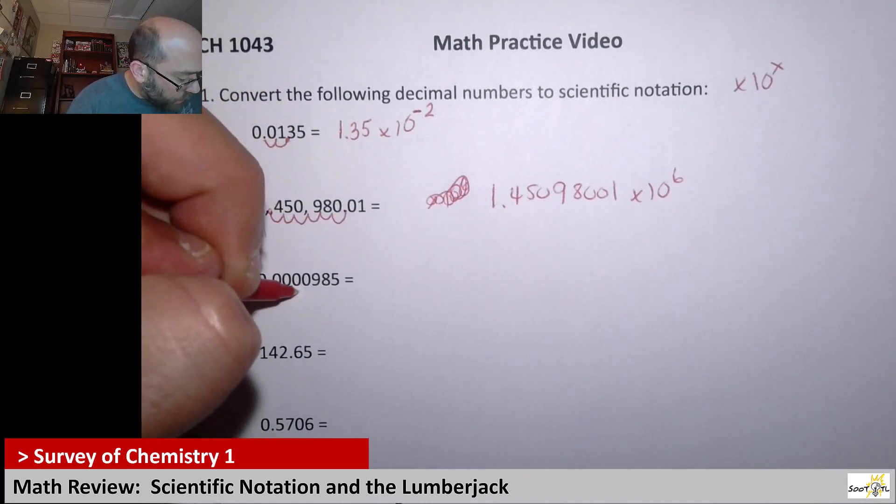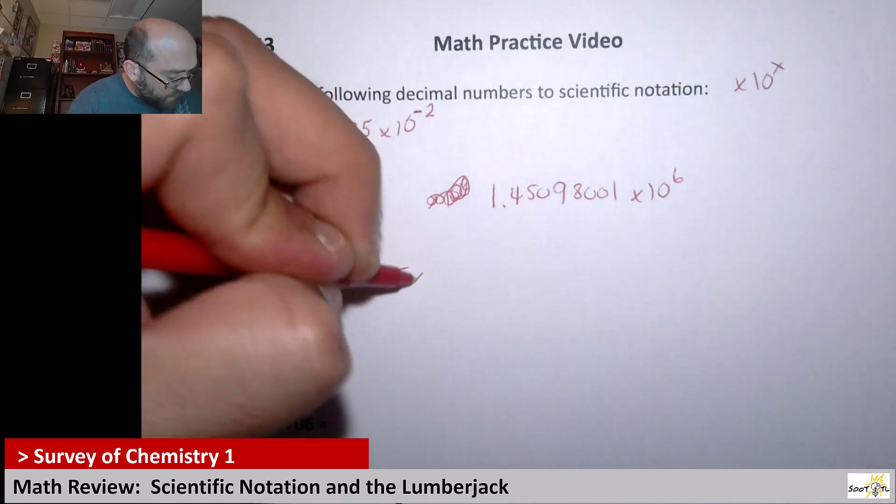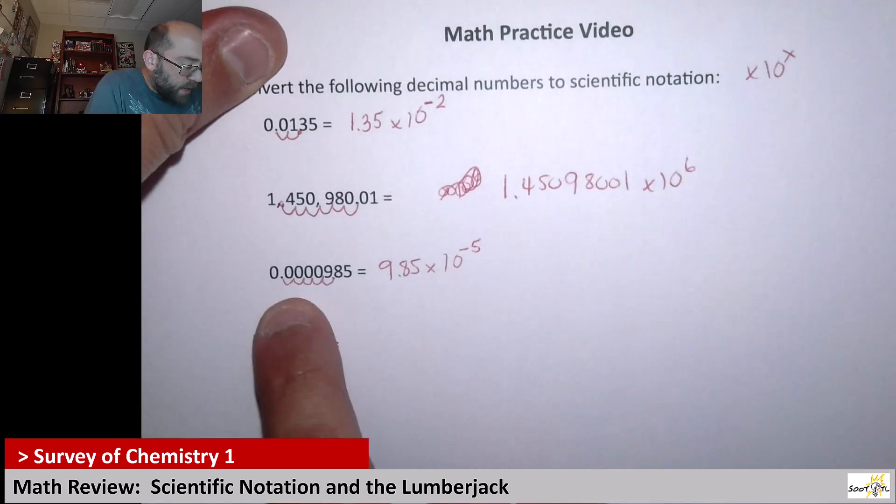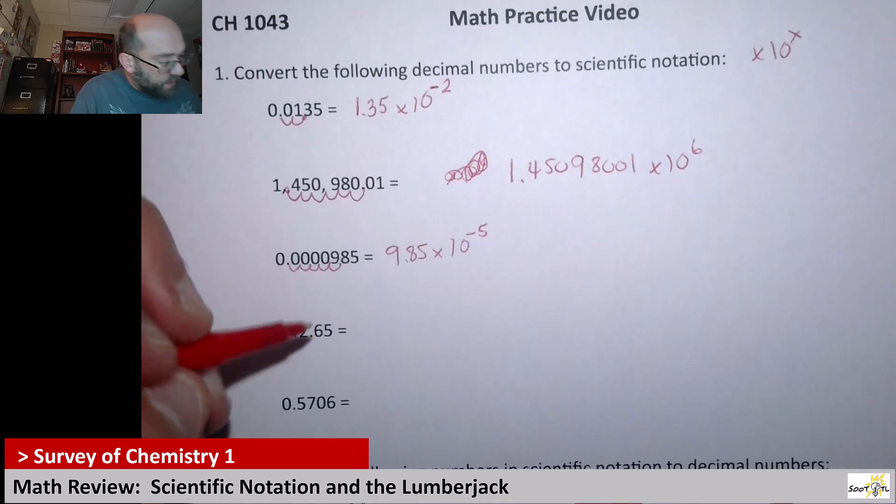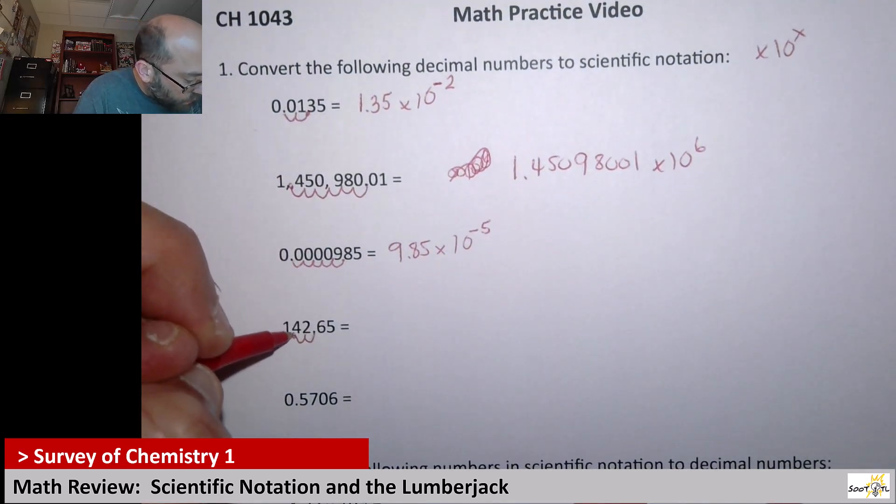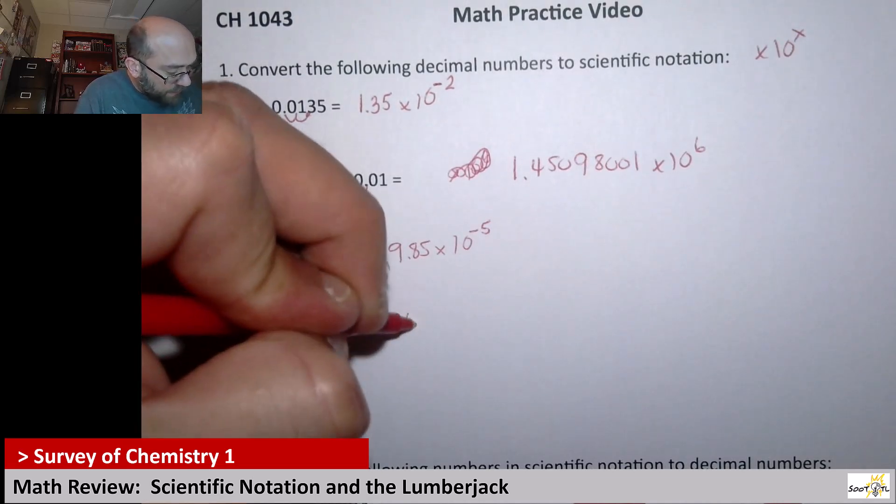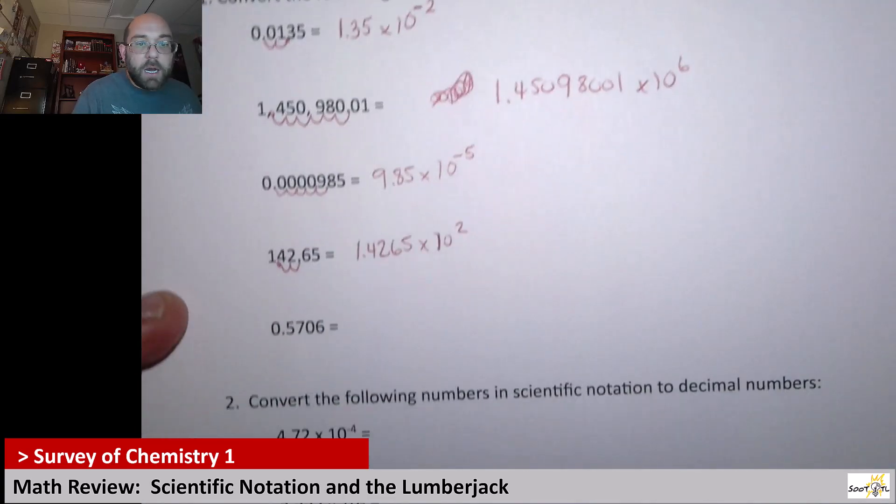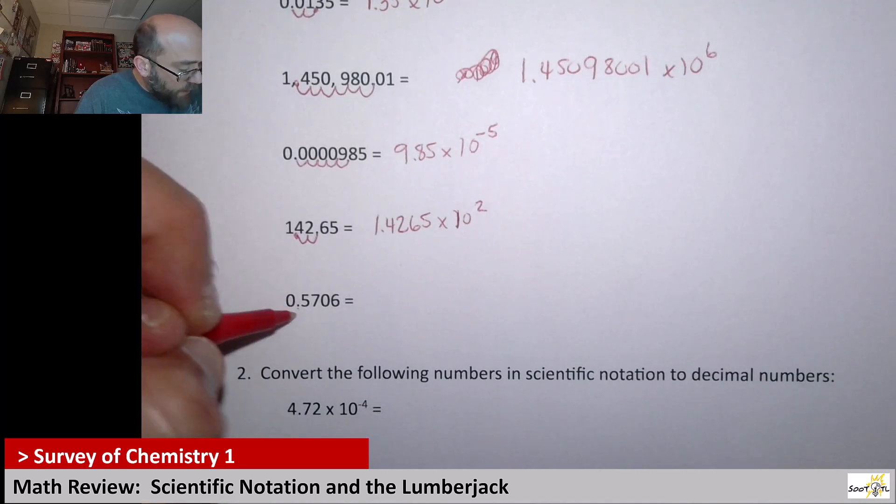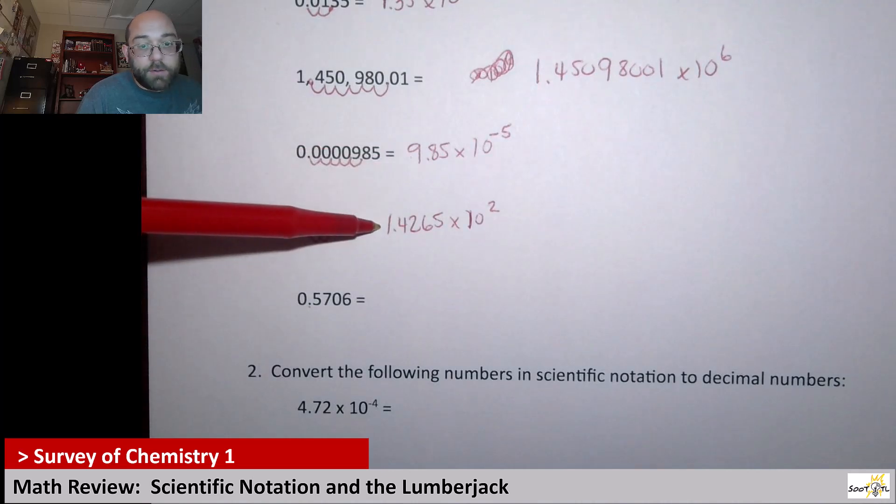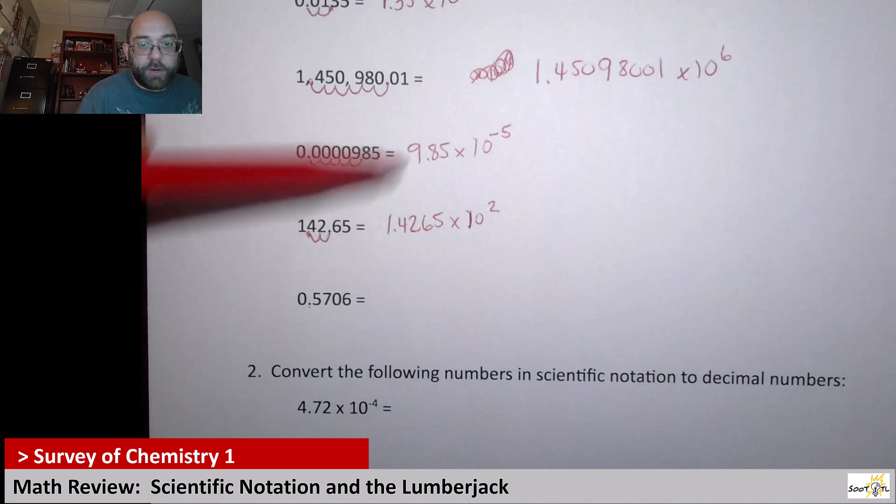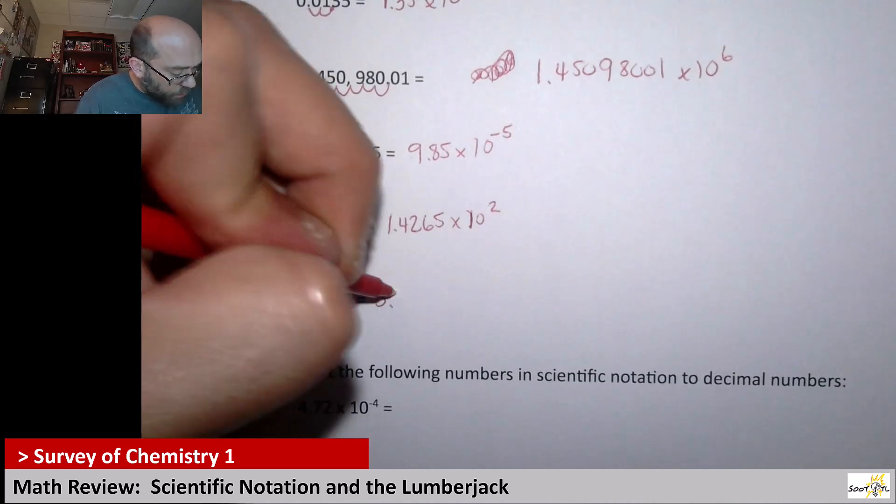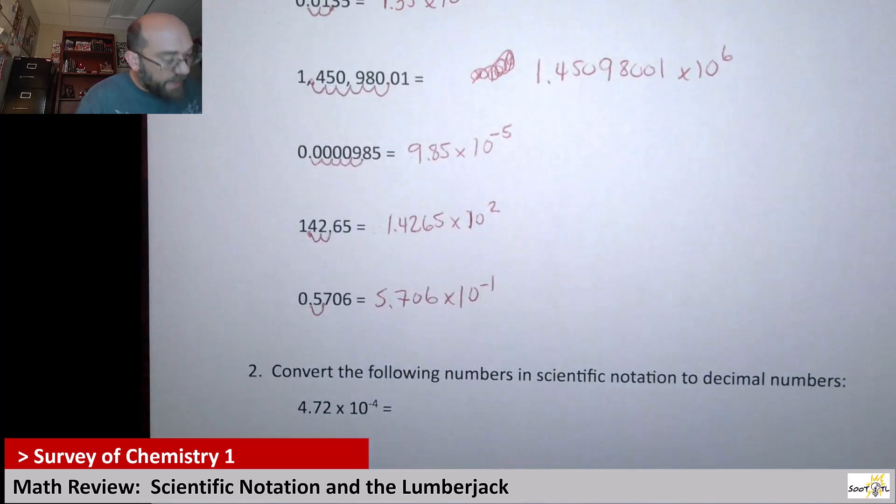Now we're going back and we're jumping to the right. So that would be 1, 2, 3, 4, 5. So it's going to be 9.85 times 10. And I had to go to the right 5 spots. So it's going to be negative 5. Having to move it backwards means I have a negative. Now in this case I'm going to have to move the decimal point forward. 1, 2. So it's going to be 1.4265 times 10 to the 2. Next up here I'm going to have to move the decimal point. So remember this first number has to be between pretty much 1 and 9. So I'm going to have to jump back one spot. So that would give me 5.706, and I had to go backwards 1. So it's going to be times 10 to the negative 1.